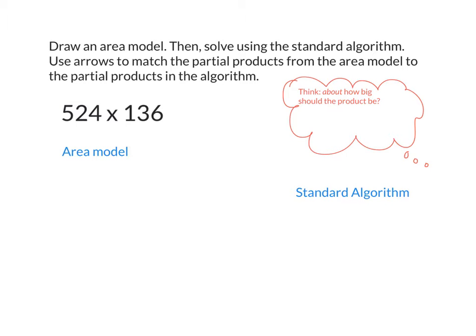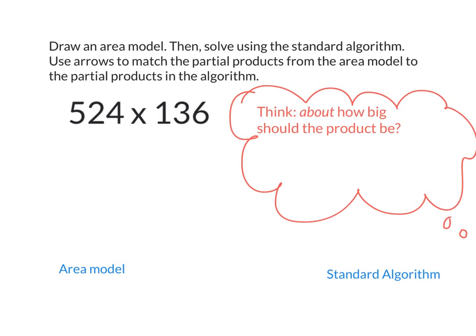Start by writing down the problem: 524 times 136. Now, before we even do the area model or the standard algorithm, let's use some estimation. About how big should our product be? Well, 524 is pretty close to what number? 500. And 136 is pretty close to what number? 100.